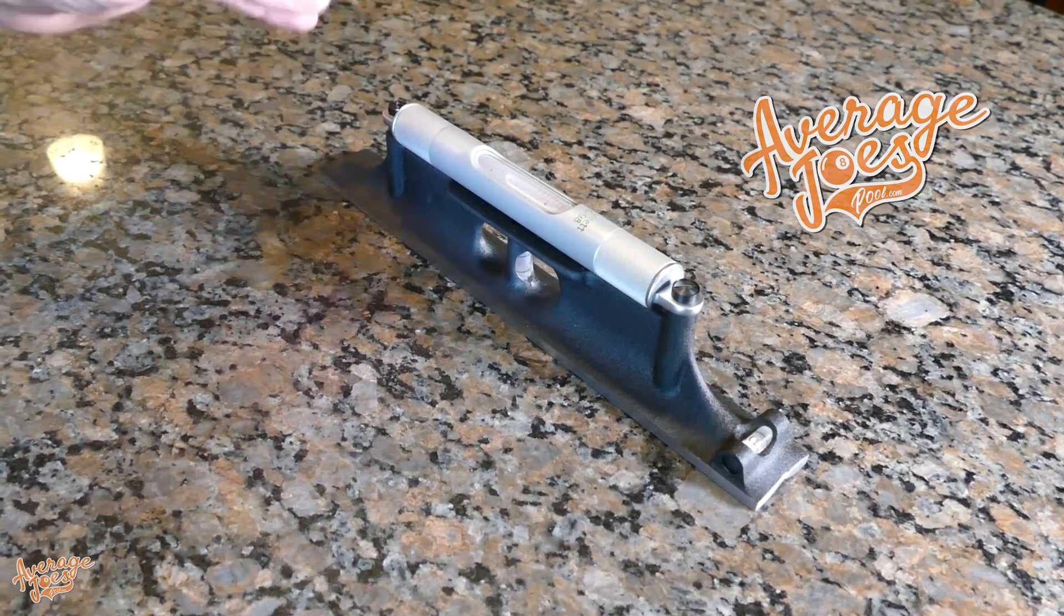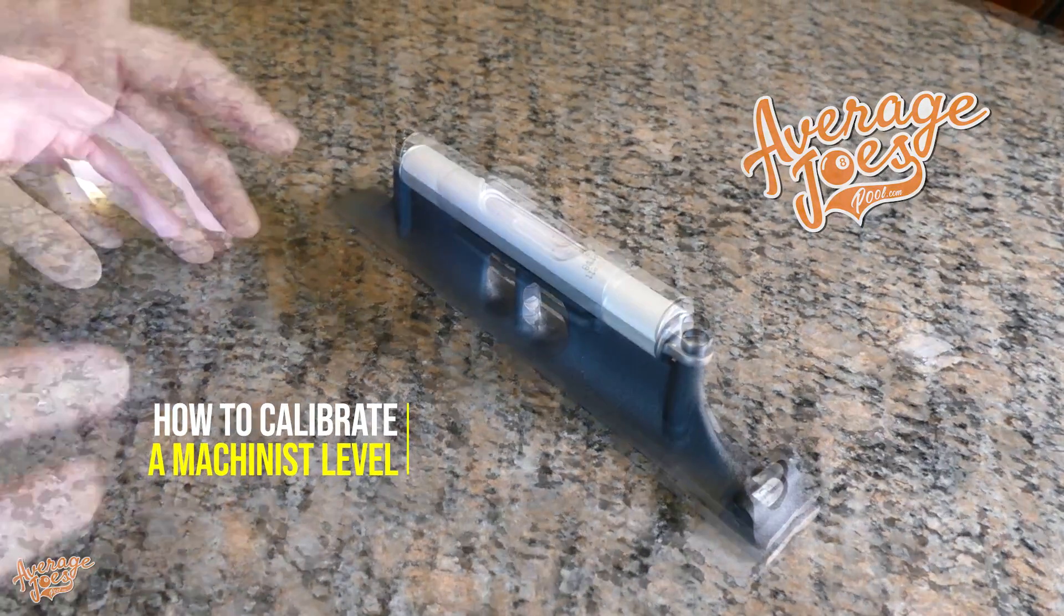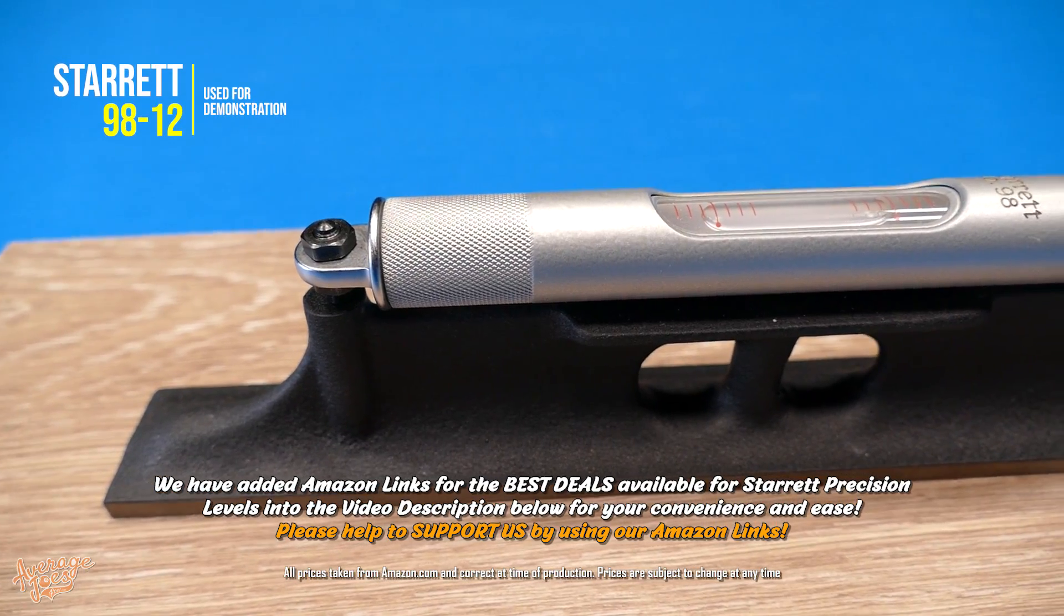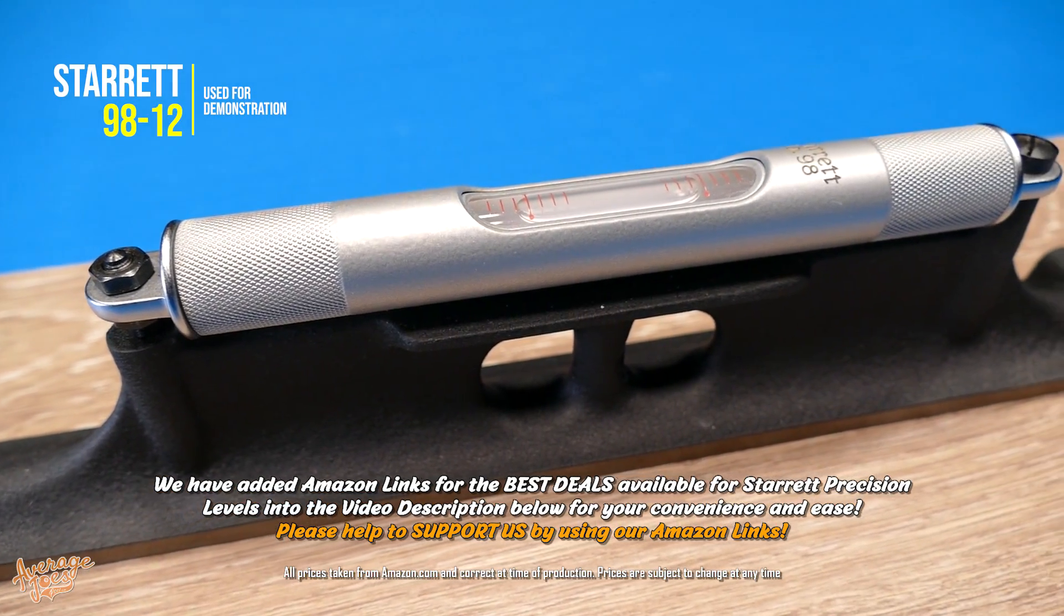We're going to have a quick look at how to calibrate a machinist level. This particular level we have here is the Starrett 98-12, however the basic process is identical for all machinist levels.